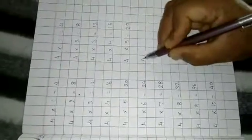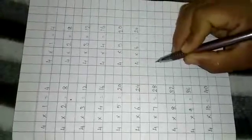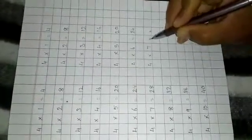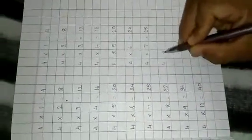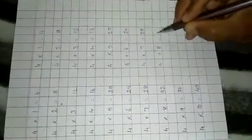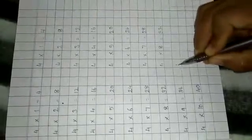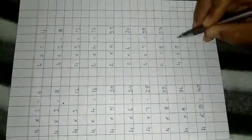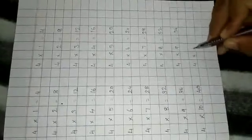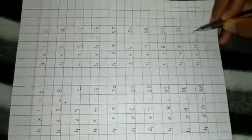4 6s are 24. 4 7s are 28. 4 8s are 32. 4 9s are 36. 4 10s are 40. Now we will repeat this table.